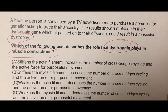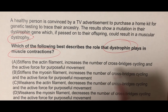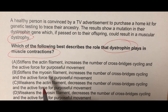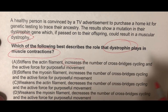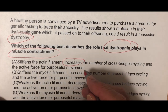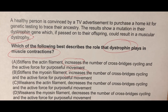Looking at the answer choices: stiffens the actin filament, stiffens the myosin filament, weakens the actin filament, or weakens the myosin filament. Stiffening is associated with increasing crossbridge cycling and the active force for purposeful movement. Weakening the actin or myosin filament is associated with decreasing the number of crossbridges and the active force for purposeful movement.